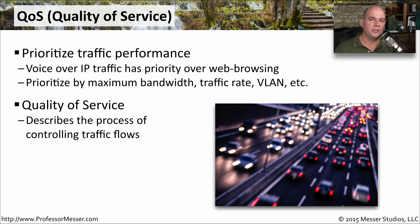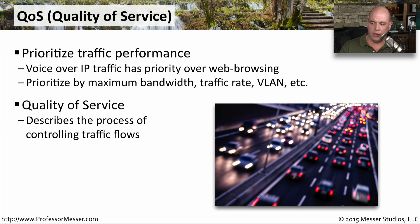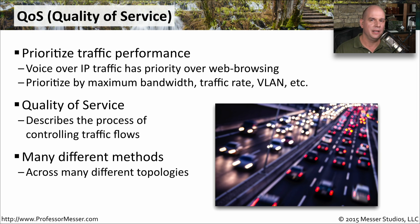We describe this prioritization as quality of service, or QoS — this is how we configure and set up our systems to provide the prioritization of one application over another. There are a lot of different ways to do this. You'll find that there are ways to do it inside of the applications, but there are also methods in the network protocols themselves that allow us to define QoS.